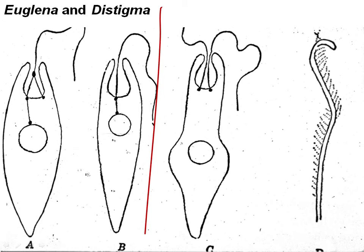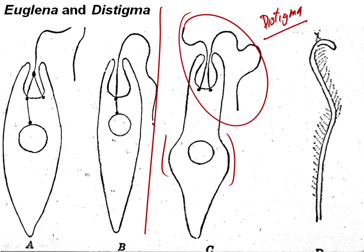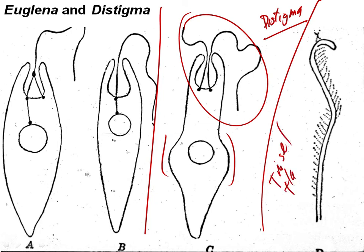Here's Euglena compared to Diaistigma. Diaistigma is not one you're required to know. It looks a lot like Euglena under the microscope — it's got a swelling around the nucleus — but it's one with two flagella, both emergent. This is the only diagram we have that shows two emergent flagella. Here's the tinsel flagellum, characteristic of all Euglenophyta — you can see those little extensions off the side of it.